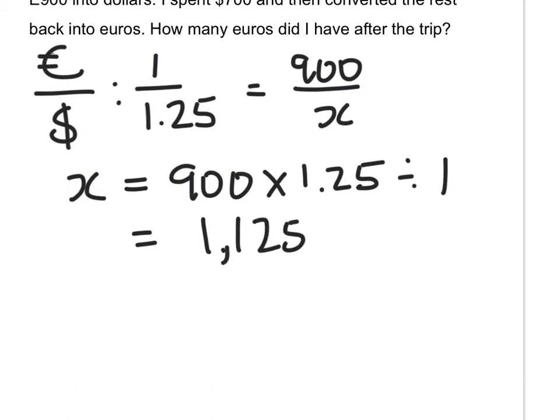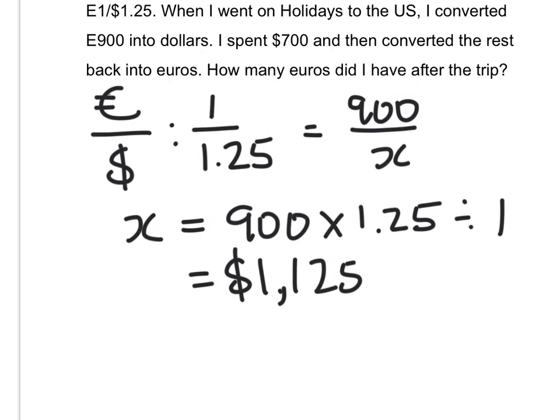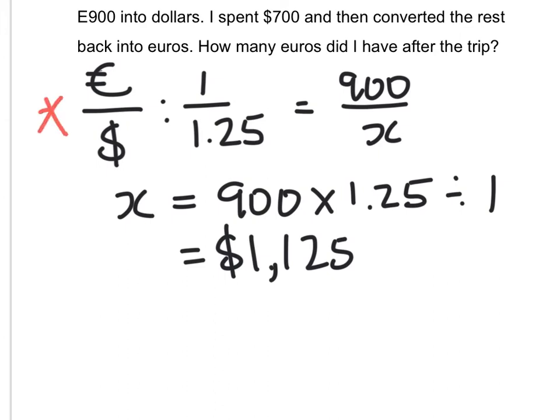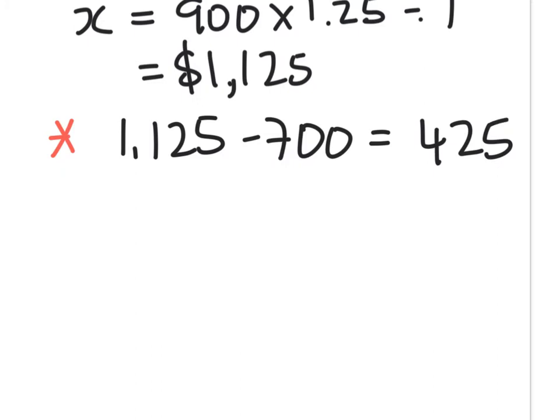So, I ended up with $1,125. So, what happened then? I spent 700. So, we'll mark these down in steps. So, I'm working out how many dollars did I have when I went to the States. Second part. I spent 700. 1,125 minus 700 means I had $425 left. Then what happens? I convert my $425 back into euros.